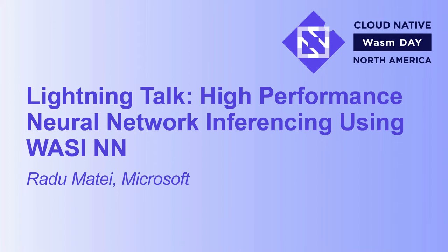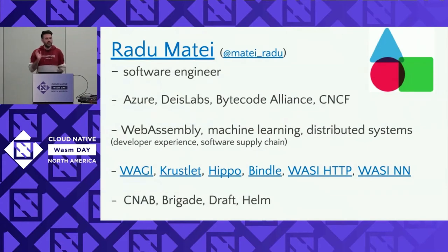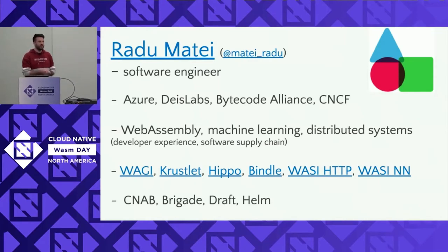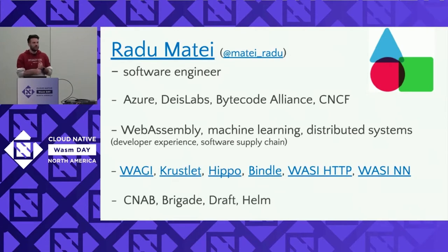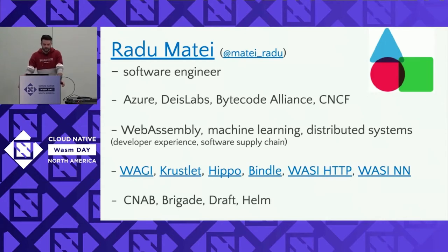Hey everyone. My name is Radu, and in the next nine and a half minutes we're going to talk about WebAssembly and machine learning. We're going to have a quick look at WasiNN and a new proposal for neural networks in WebAssembly. I'm a software engineer. I work at Microsoft Azure. If you've seen a bunch of Deus Labs projects mentioned today, I work on that team. We also do a lot of work with the ByteCode Alliance and the CNCF. I'm interested in everything that has to do with WebAssembly, machine learning, distributed systems, and most often the combination of the three.